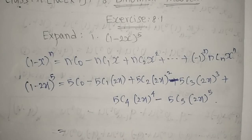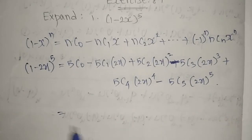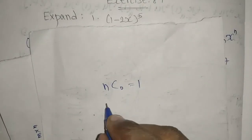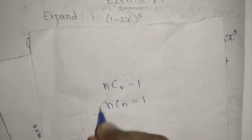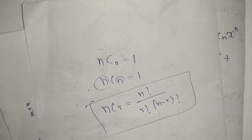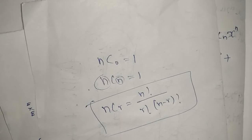For 5C0, since C0 always equals 1, and nCn also equals 1, both are the same value. For the remaining terms, use the combination formula: nCr equals n factorial divided by r factorial times (n minus r) factorial. This formula was explained in a previous video on Chapter 8.